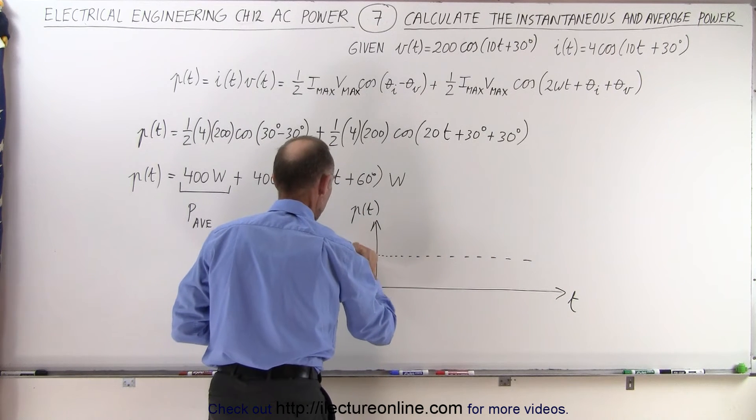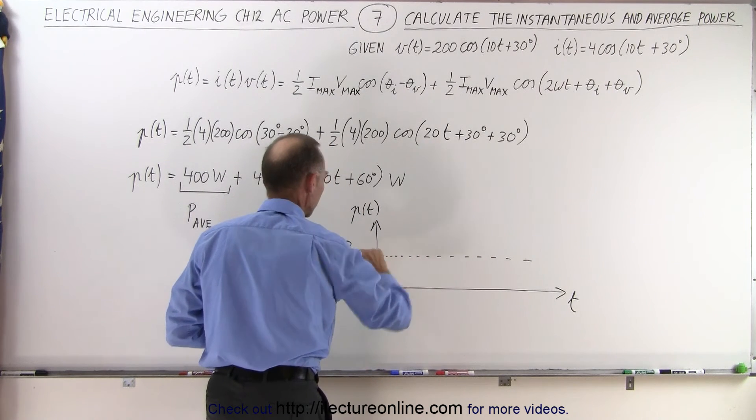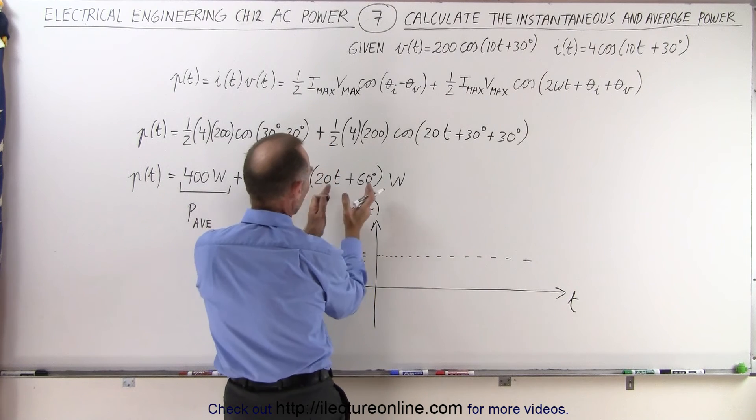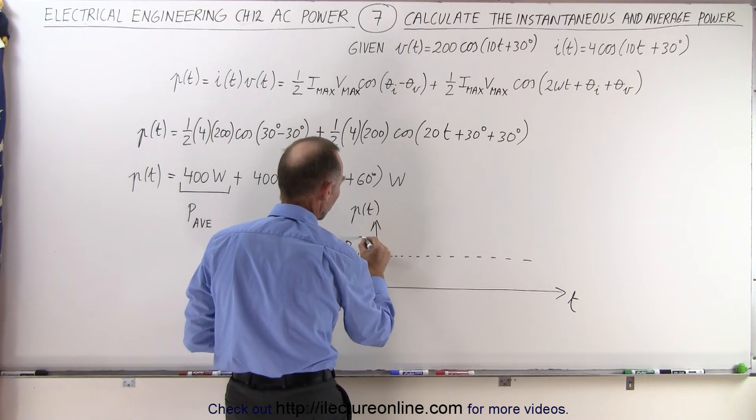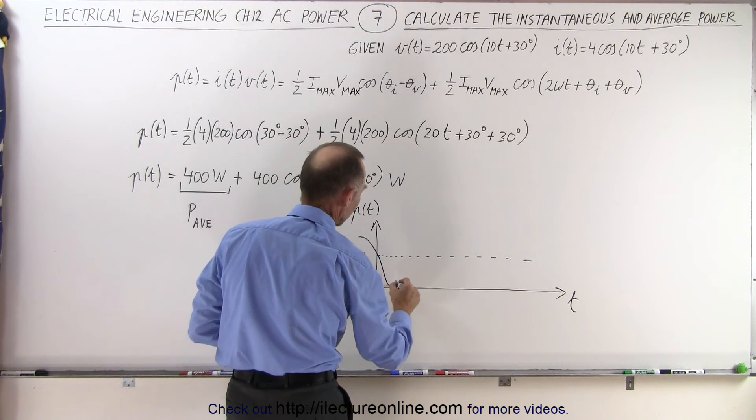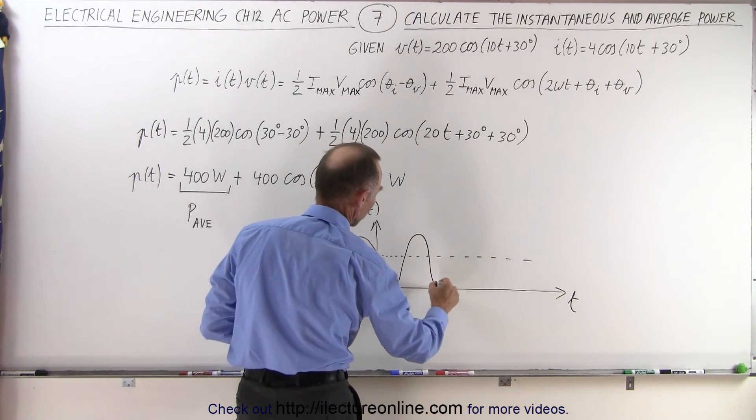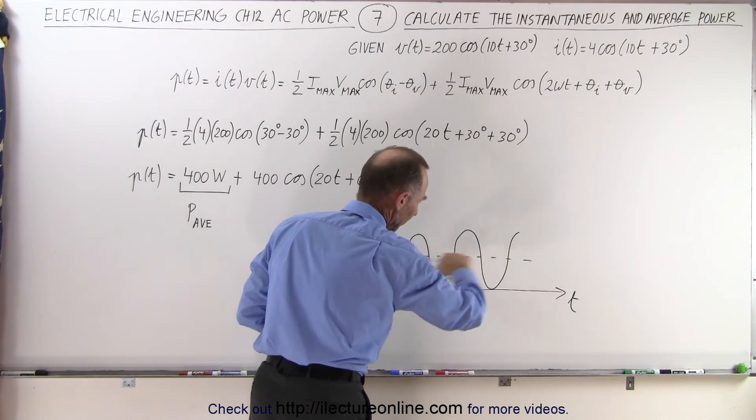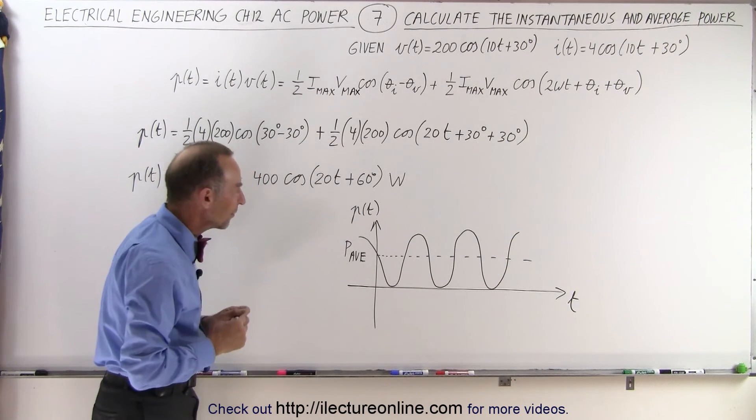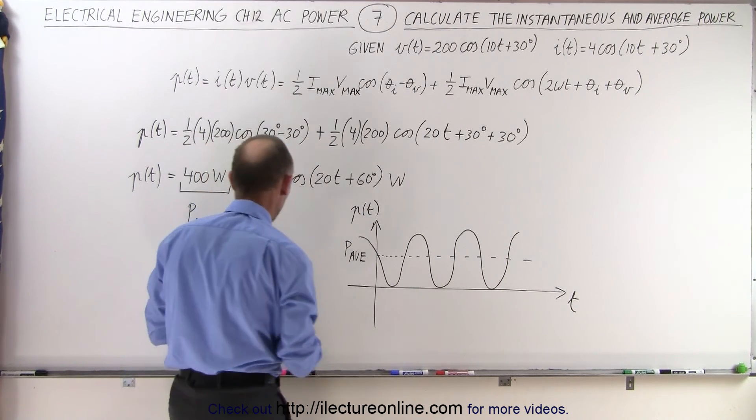The average power is right here. That would be P average, and then the oscillatory part. Now notice we have a phase angle of 60 degrees that would shift things to the right a little bit, so it probably looks something like this, so that the sinusoidal function sits squarely on top of the average power.